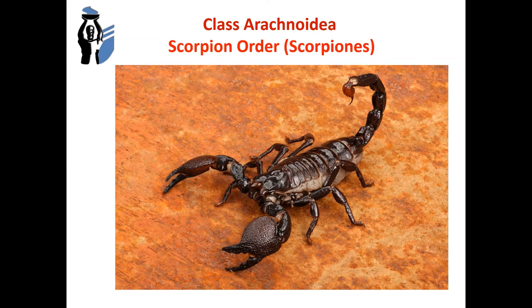Class Arachnoidea, order Scorpiones. The scorpion body is divided into a cephalothorax and a mobile abdomen. For defense and attack, they have a sting at the base of which the ducts of two poison glands open. The venom contains neurotoxic polypeptides. After stinging, a person experiences pain, hyperemia, swelling, and a feeling of numbness. Symptoms of general intoxication develop: breathing and swallowing become difficult, with possible palpitations, chills, and convulsions. All symptoms can last several days; the prognosis is generally favorable.